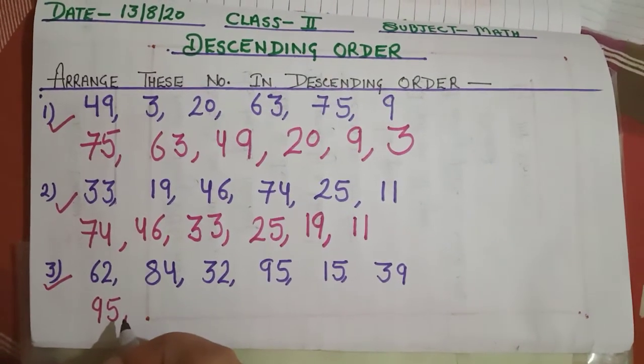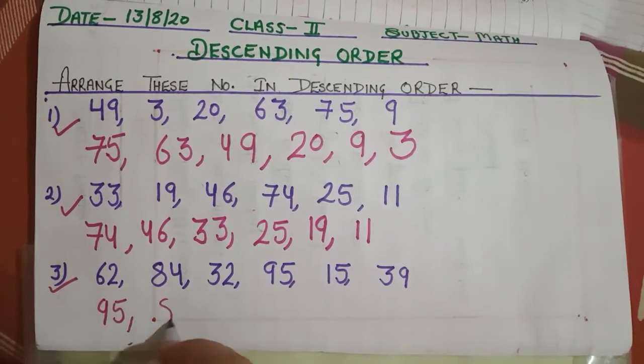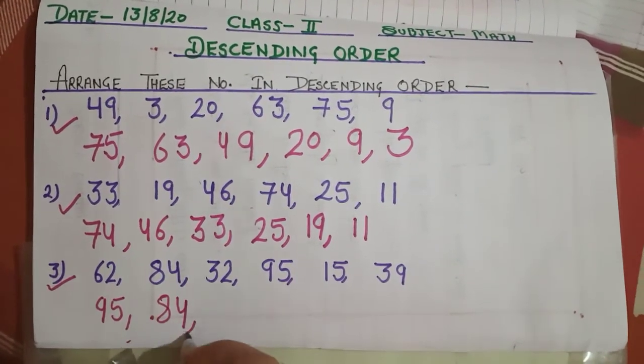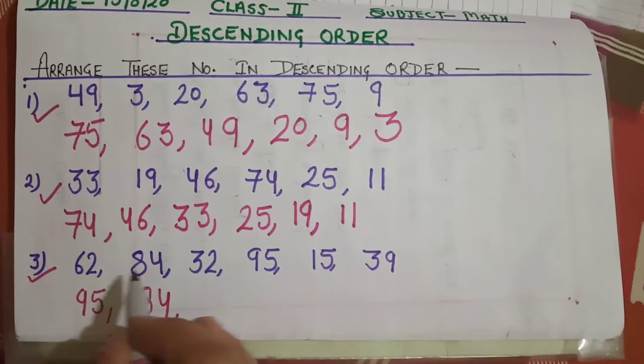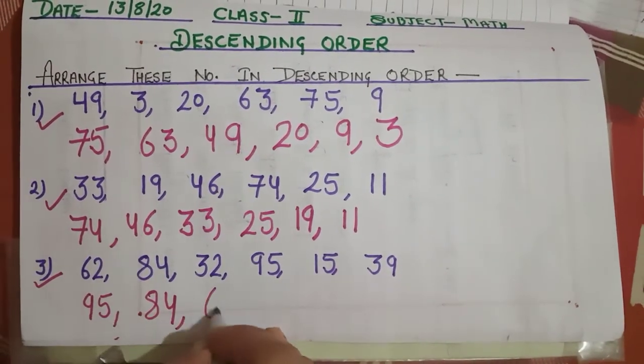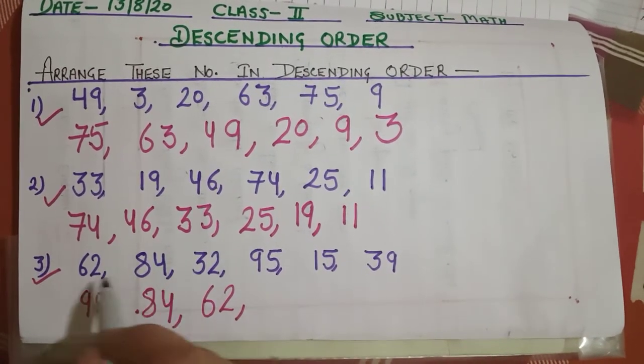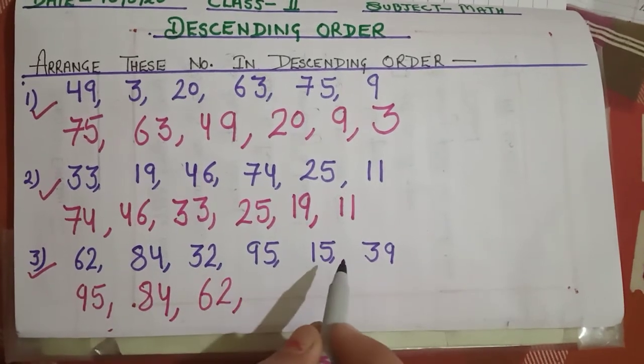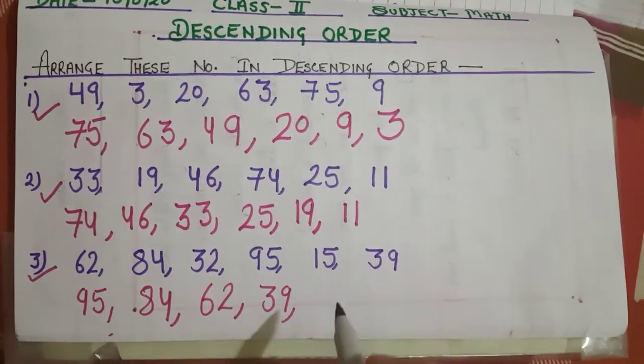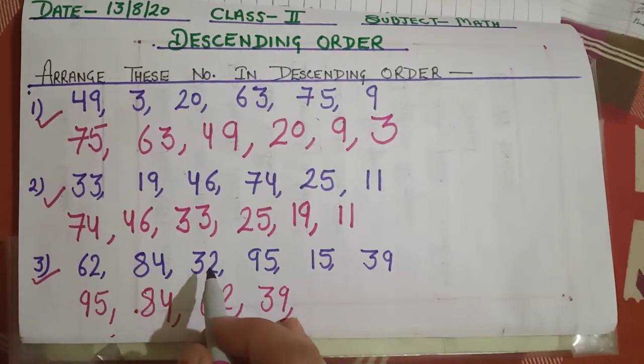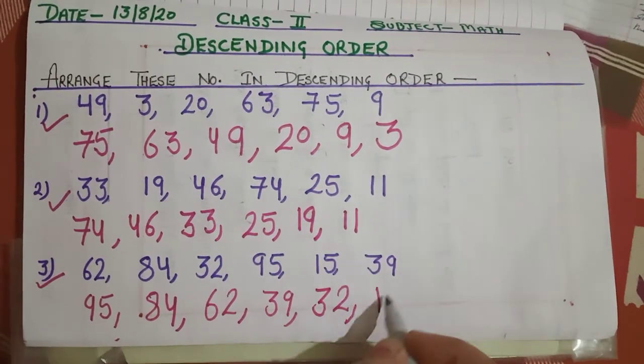And which number will come after 95? Yes, 84. Then after 84, 62. And which number will come after 62? Yes, 39. After 39? Yes, 32. And the last number is 15.